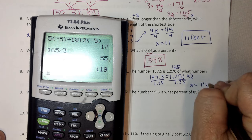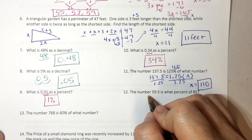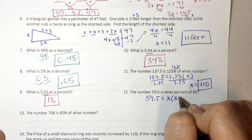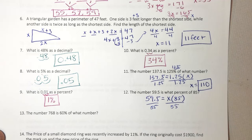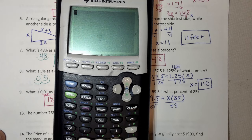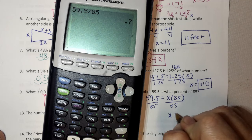So same concept here. 59.5 is what percent we don't know of 85, which means multiply. Divide both sides by 85. Now when it's asking for percent, I have to turn that decimal into a percent first. So I have 59.5 divided by 85. And I get x equals 0.7. Turn it into a percent. And I get 70%.